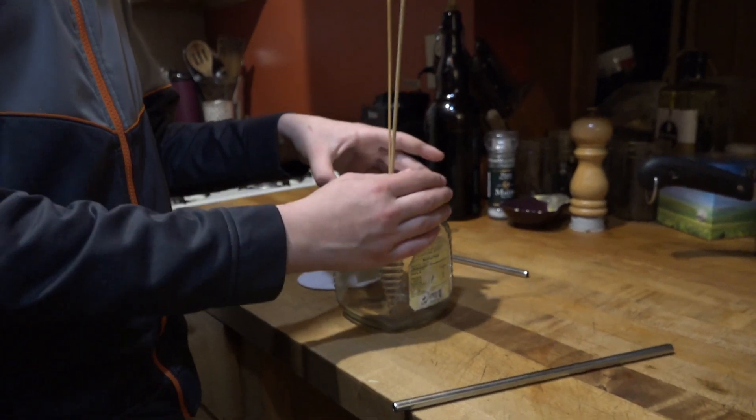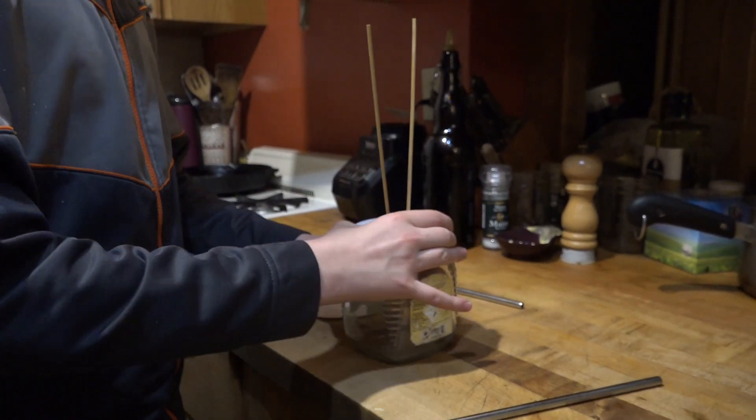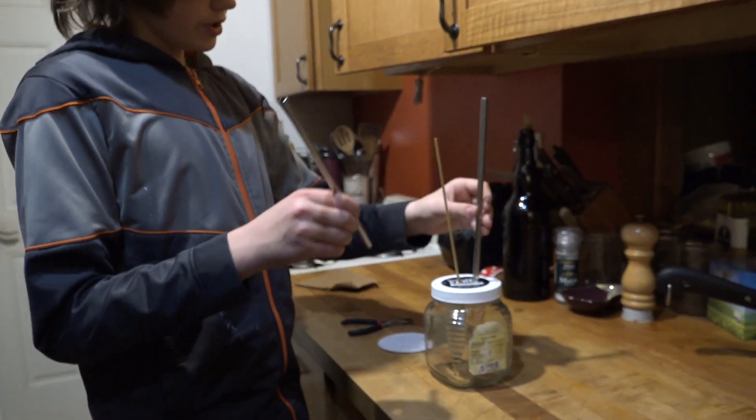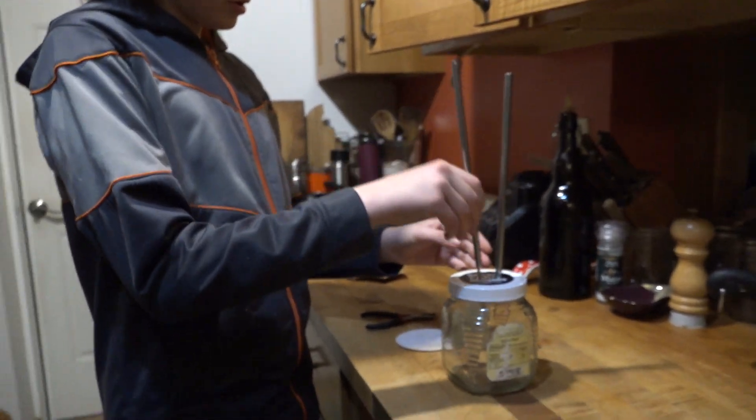I created this simple Jacob's Ladder using two wooden kebab skewers, a plastic jar lid, and two of these metal reusable drinking straws that my eco-friendly parents happen to have.